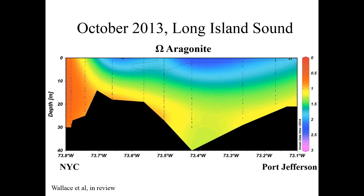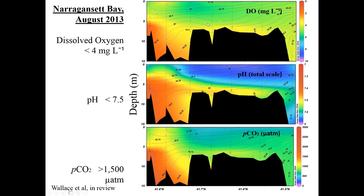That's Long Island Sound. I want to jump in and show that what we're seeing there, we're also seeing in other systems. Here is Narragansett Bay in August of this past summer. This shows the northern extent near the Seekonk River on the left, and on the right where Narragansett Bay exchanges with Block Island Sound. During August we saw hypoxic waters in the bottom of the northern extent, and those hypoxic waters had low pH and were enriched in pCO2. This is a trend we've now seen in at least four major estuary systems across the northeast U.S.